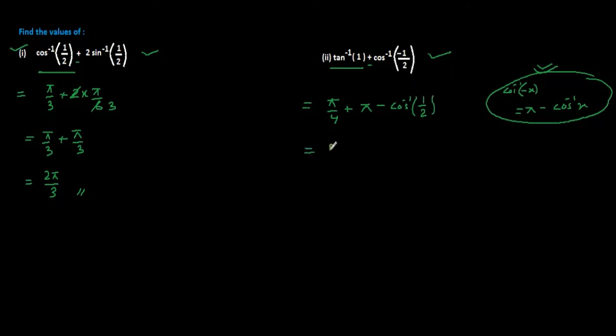Pi minus is there, that is why we are going to write pi minus cos inverse 1 by 2. Here, pi by 4 plus pi minus, at which angle cos become 1 by 2? We know that is 60 degree, that is pi by 3. If you take the LCM you will get 4, 3 and here we have 1.